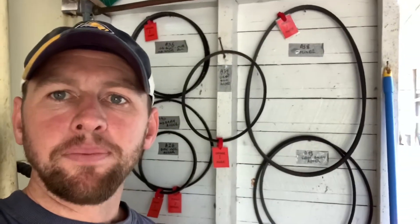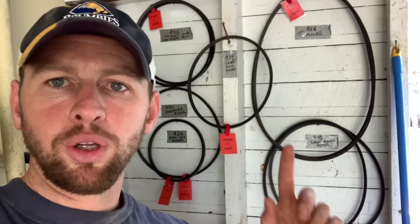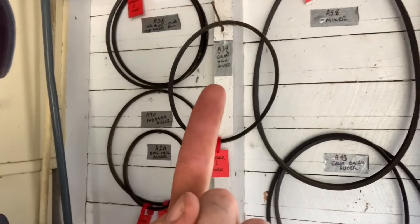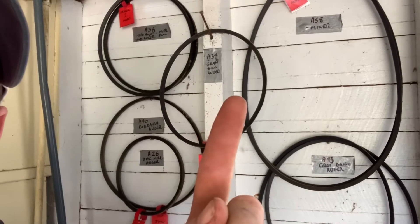So what we've got here is our belts for a lot of the dairy equipment, and obviously we've got it in the dairy area, nice and close to where we need to fix things. We've got labels on everything. We've just used duct tape